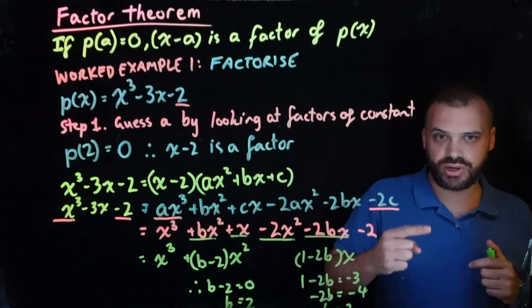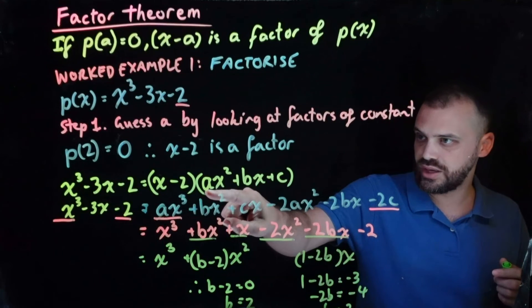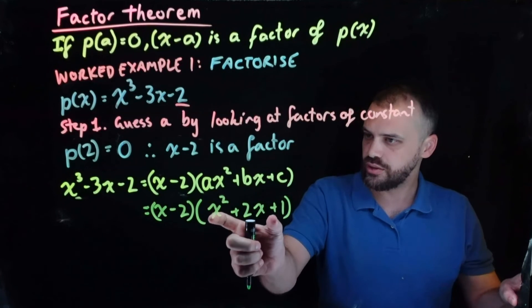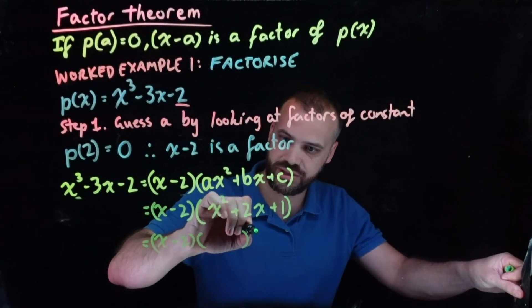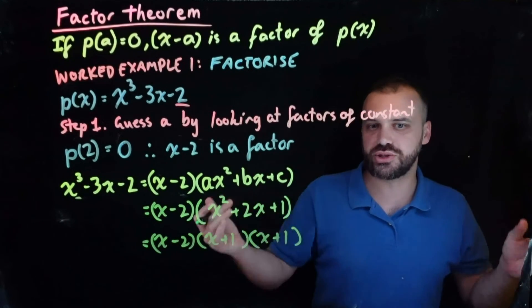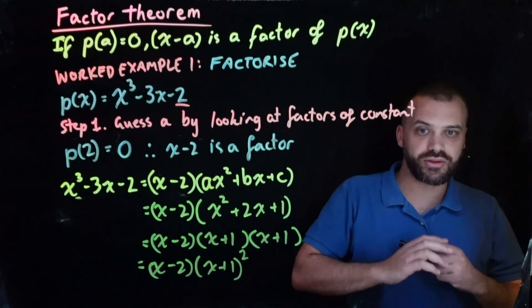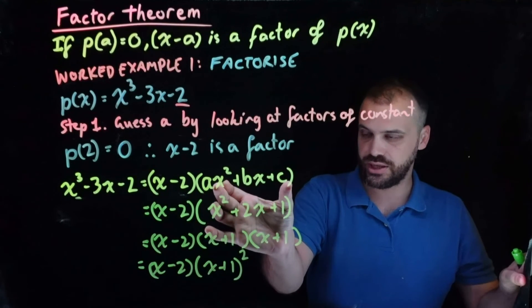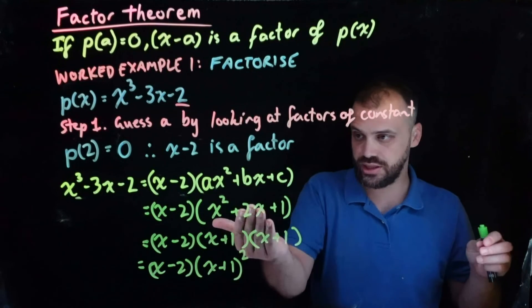So we now know a equals 1, b equals 2, and c equals 1. Plugging them into our quadratic, we have x minus 2 times x squared plus 2x plus 1. This quadratic factorizes to x plus 1 times x plus 1. We can write this more neatly as x minus 2 times x plus 1 squared. That is my preferred method for factorizing: create the mystery quadratic, expand it, solve for a, b, and c, then factorize.